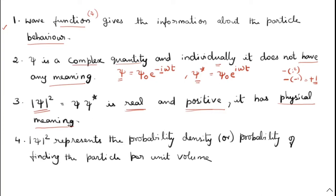So you will have the doubt: what physical meaning does it consist of? That is the next point. |Ψ|² represents the probability density, or the probability of finding the particle per unit volume. Just as I discussed in the definition part, the wave function gives the probability — within a given volume, whether the particle is present or not, that probability is given by the wave function. That is the physical meaning.